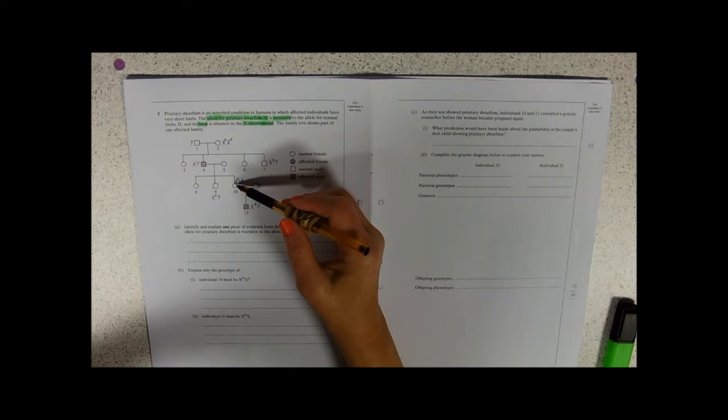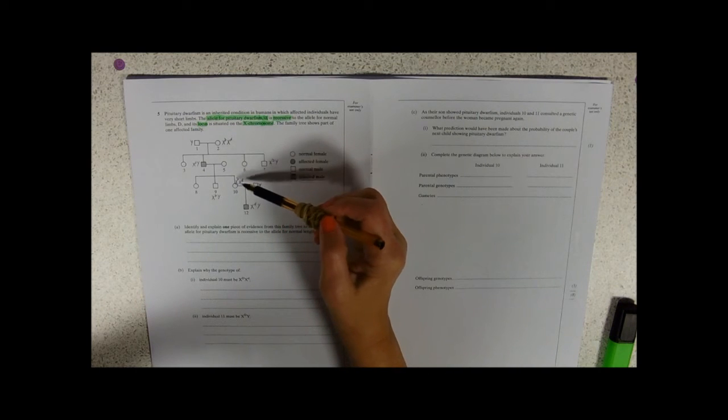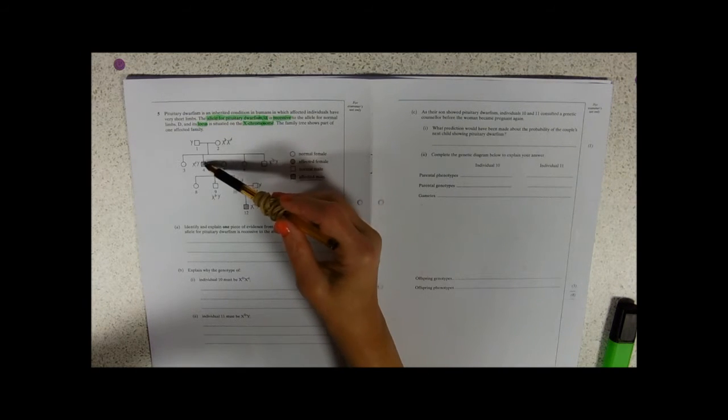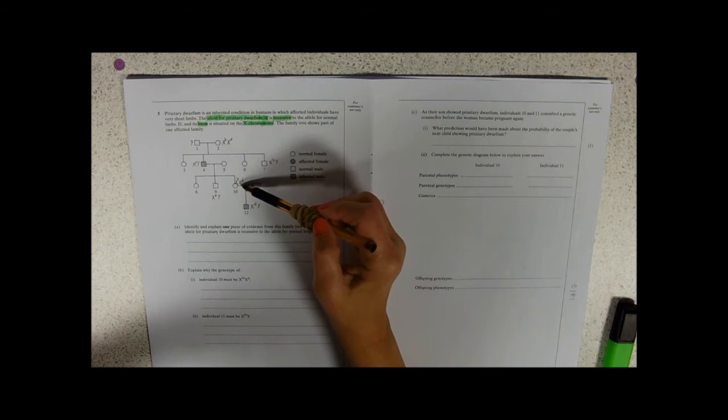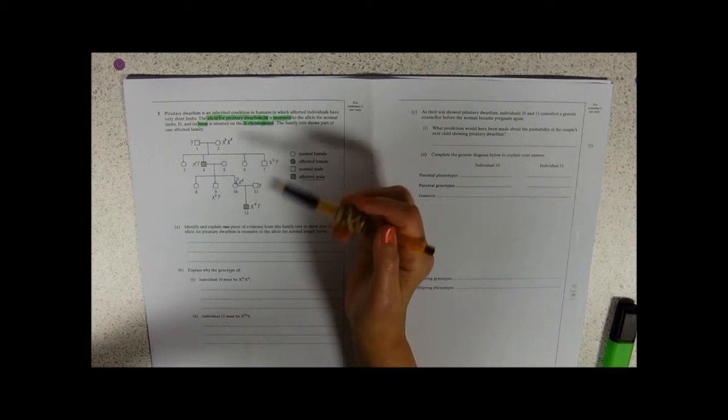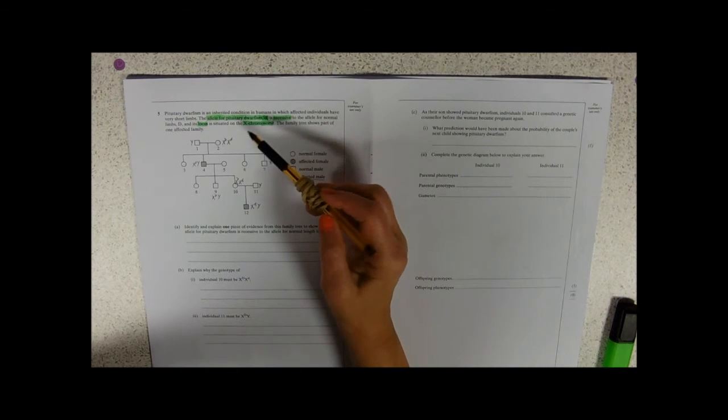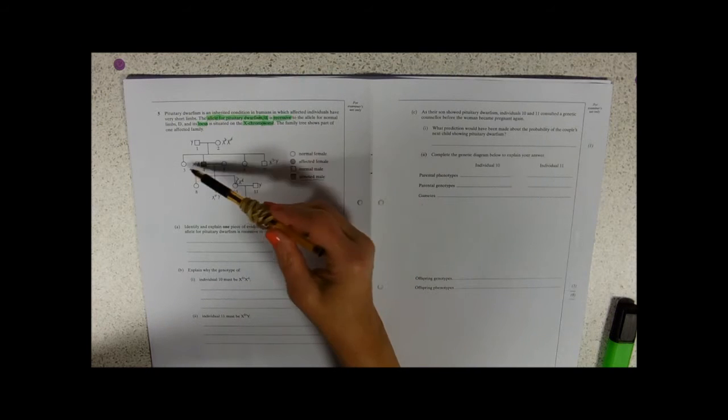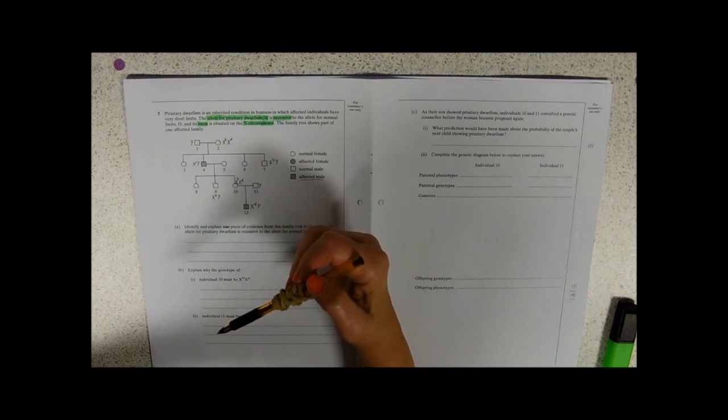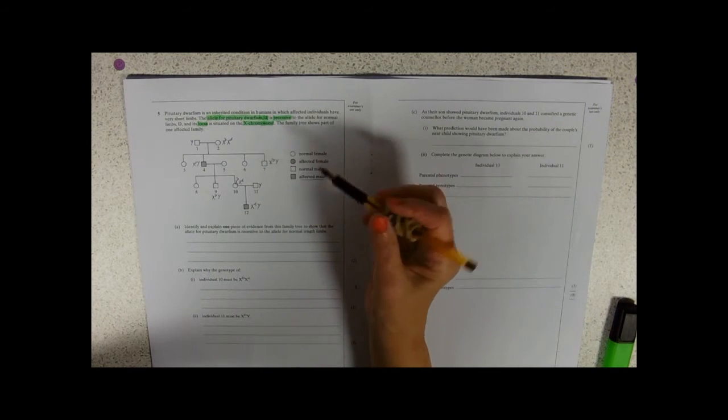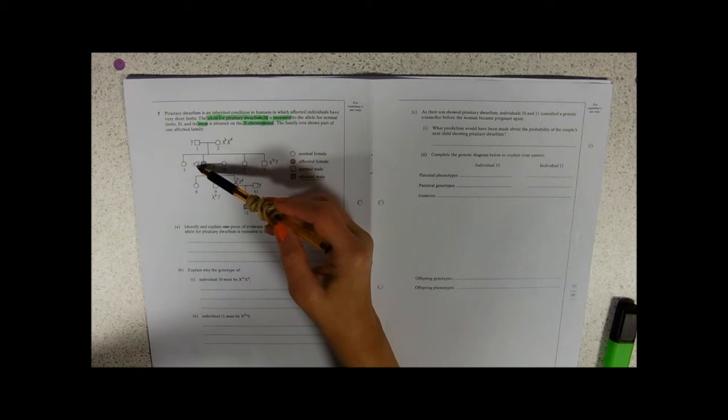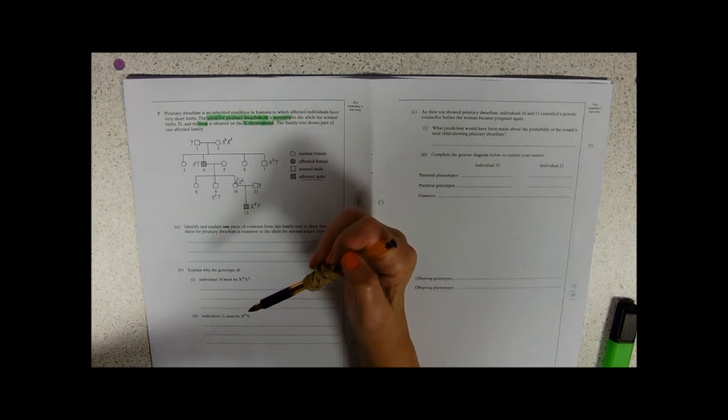Now, number 10 could have inherited her X chromosome from number four. That's where she's got that one from. She's got that from her dad. We don't know anything about number six or number three, because they have no children. The only X chromosome number four's got to hand on is that one that's affected, so that's where number 10 has got hers from.